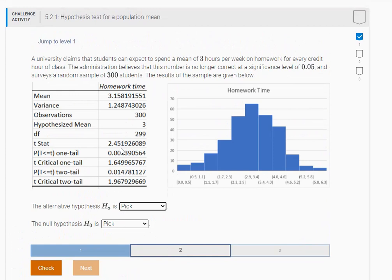All right, let's try this one here. A university claims that students can expect to spend a mean of three hours per week on homework for every credit hour of class. So if it's a four-credit class, you're going to be spending 12 hours a week on homework. The administration believes that the number is no longer correct. They believe it's no longer three hours. Notice how they don't say greater than or less than three hours—they just think it's no longer three hours.